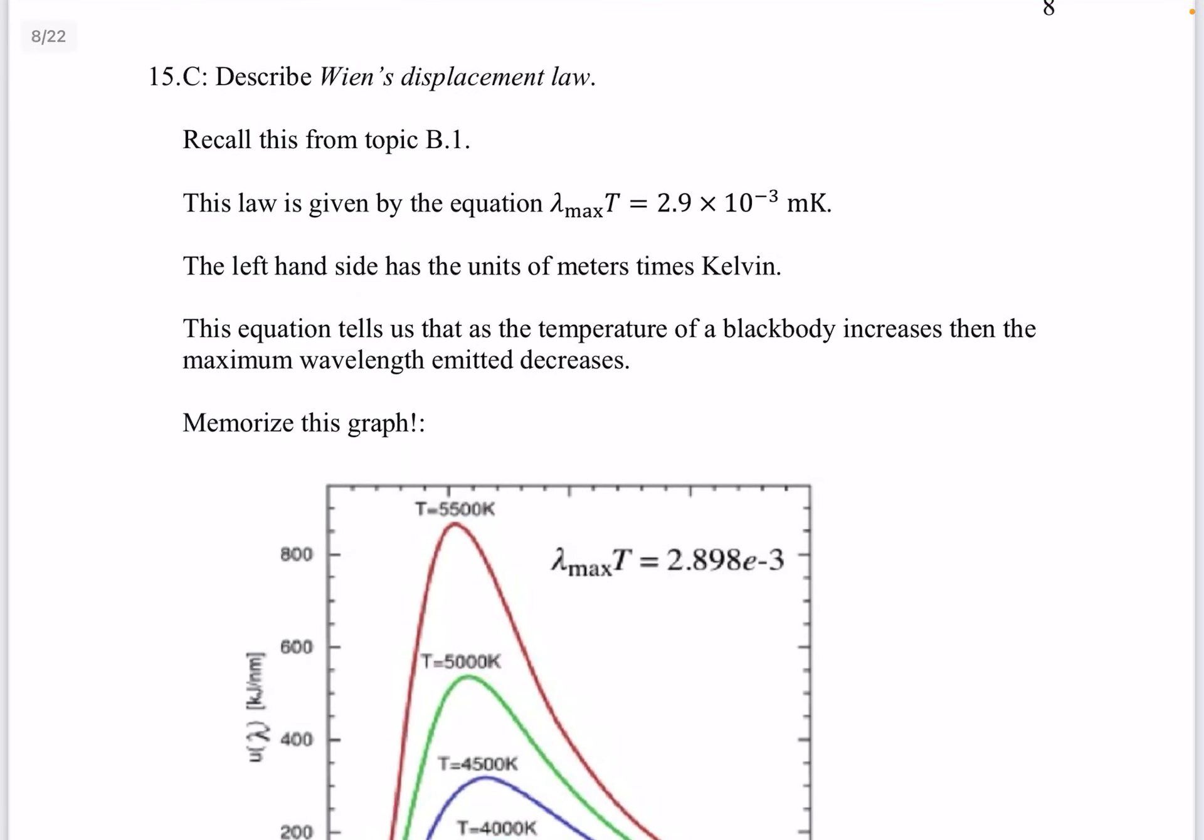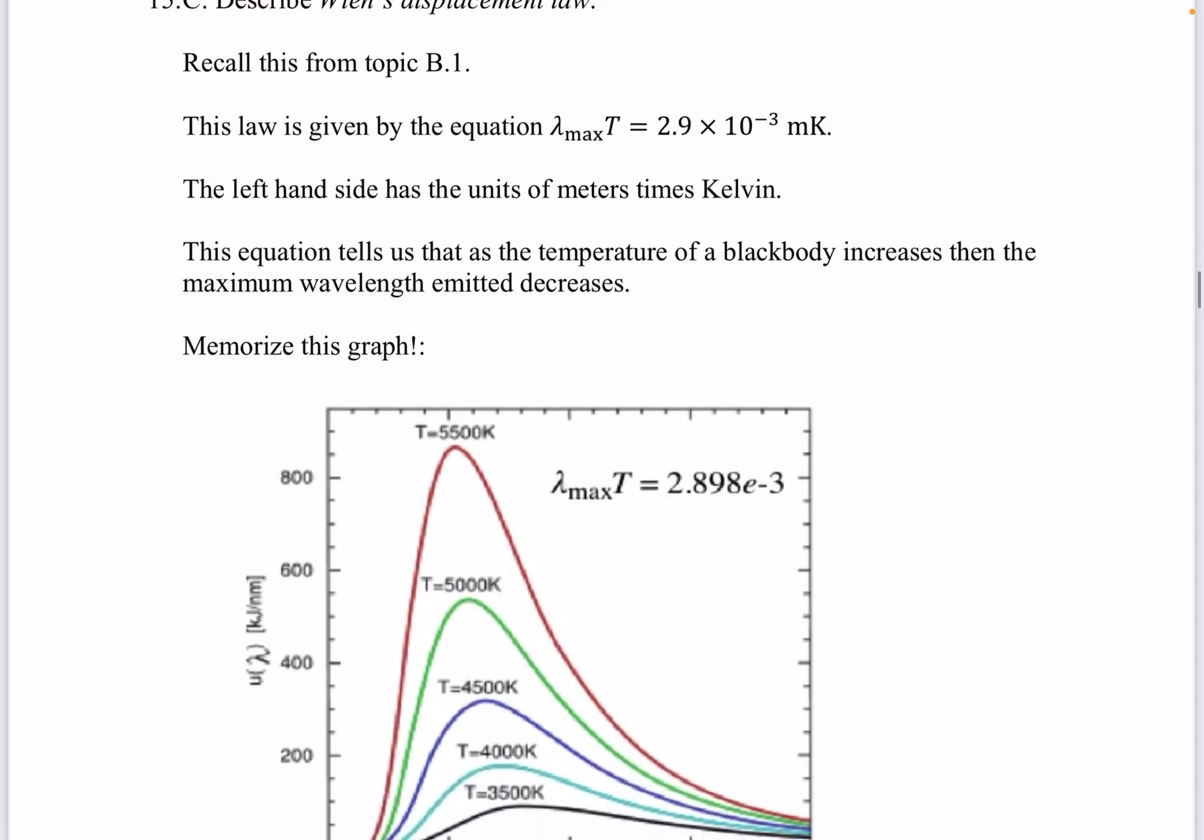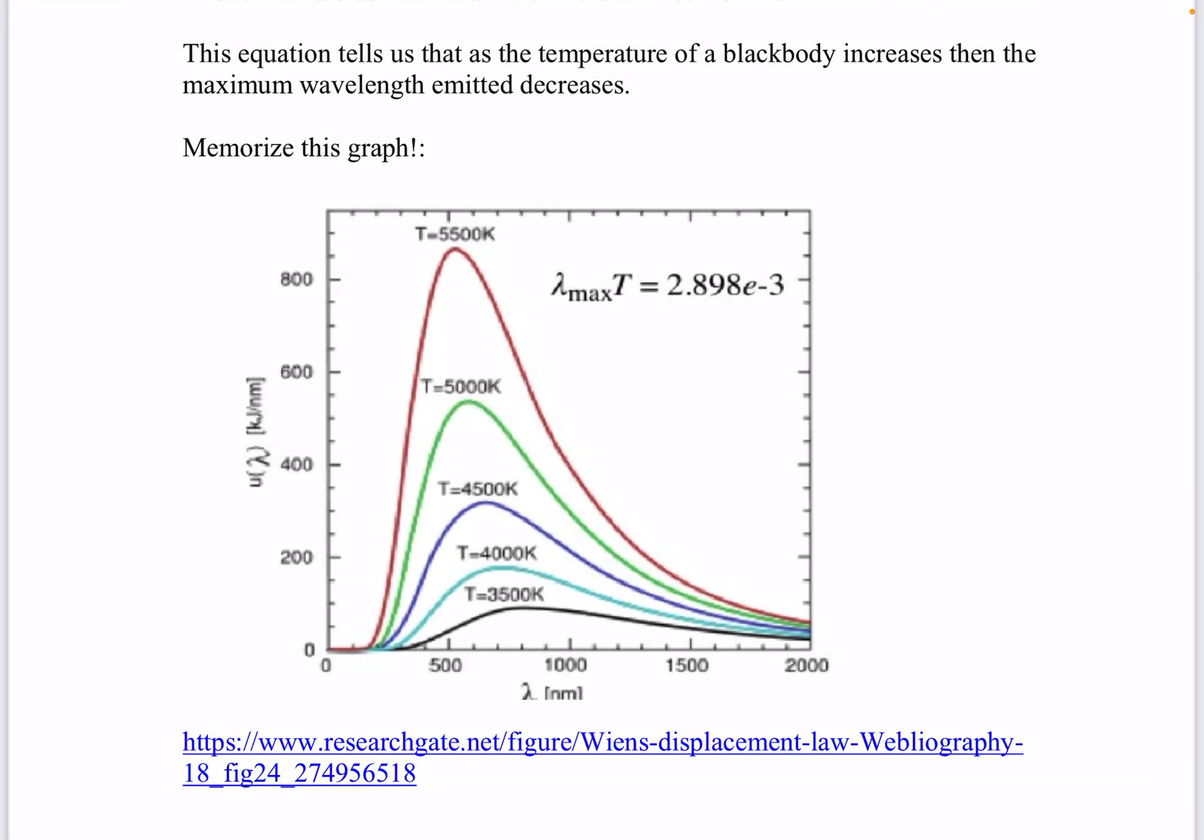Question 15. Describe Wien's displacement law. Remember lambda max times temperature is 2.9 times 10 to the minus 3 meters times Kelvin. That's not millikelvin. That's meters times Kelvin. This equation tells us that as the temperature of a black body increases, then the maximum wavelength emitted decreases. And the maximum frequency therefore increases. Because v equals lambda f. So this is for one object. As you continue to increase the temperature of this black body, the maximum wavelength decreases. The maximum wavelength emitted from this black body.